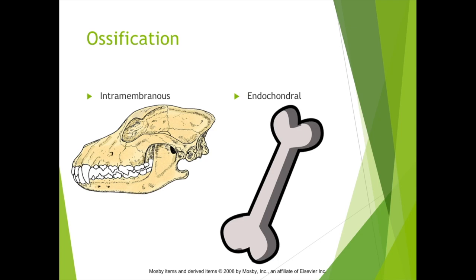In intramembranous ossification, the osteoblasts lay down bone between two layers of fibrous connective tissue, and there's no cartilage template. Endochondral ossification involves replacement of a hyaline cartilage model within the embryo by bone. This process starts in the developing embryo but is not completed fully until the animal has reached maturity and growth has ceased. Long bones of the limb develop by this method.